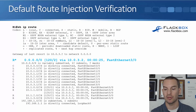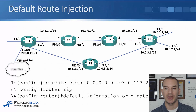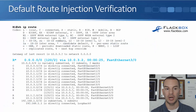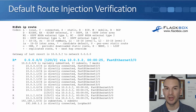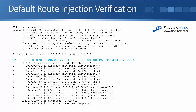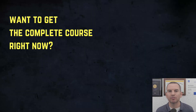On R1 — which is all the way on the other side of the topology from R4 — doing 'show ip route' confirms a RIP route for 0.0.0.0/0. The administrative distance is 120 because it's RIP, the hop count is 2, and the next hop is 10.0.3.2 out interface FastEthernet3/0. That covers everything about RIP. The next lecture will be a lab demo of a basic RIP configuration.